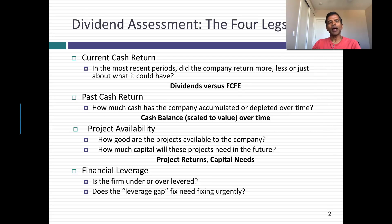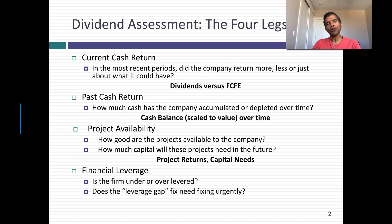Why might that matter? Because if you're a company that's under-levered, you might want to pay out more than your free cash flow to equity as dividends or buybacks, because it draws down your equity and pushes up your debt ratio. The reverse is true if you're over-levered.